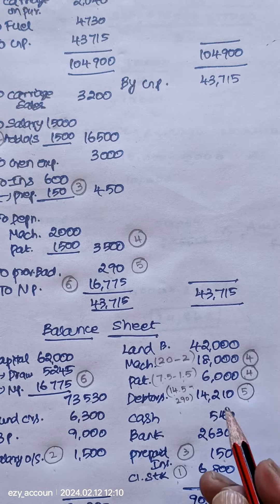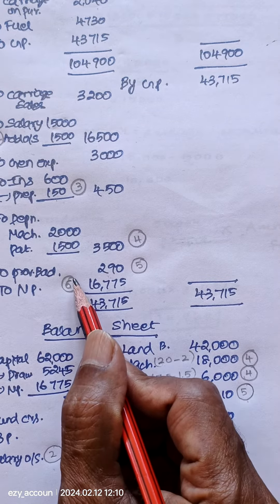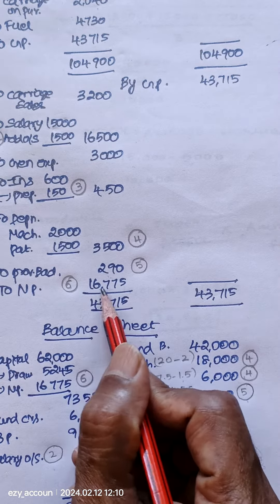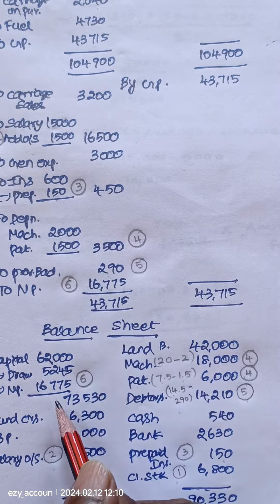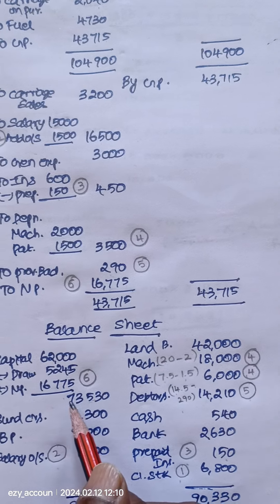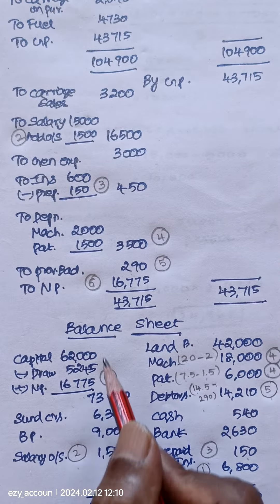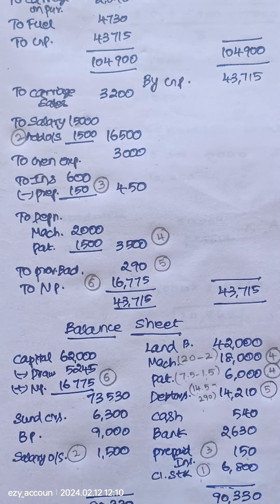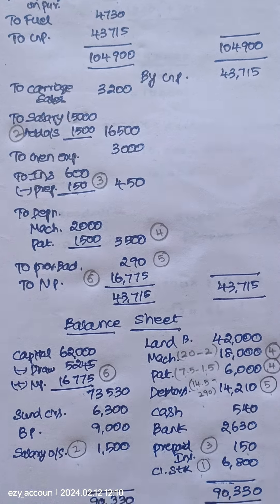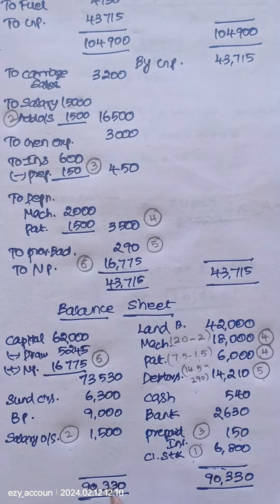The last adjustment is the transfer of net profit: 16,775. So these are the six adjustments in total, and our balance sheet will exactly match.